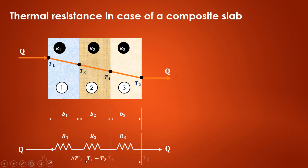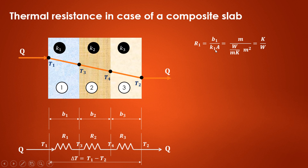The resistance offered by slab 1 is B1 upon K1·A, where A is the cross-sectional area through which heat flows, assumed to be the same for all three materials. B1 is the width in meters, K1 is the thermal conductivity in Watts per meter Kelvin, and cross-sectional area is in meter square. The units simplify to Kelvin per Watt. R2 is B2 upon K2·A, and R3 is B3 upon K3·A.